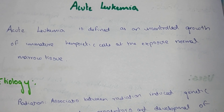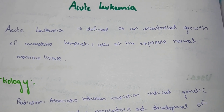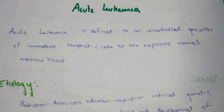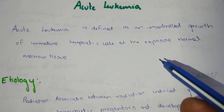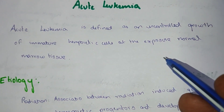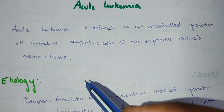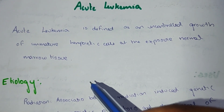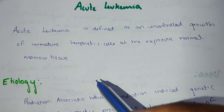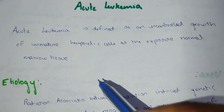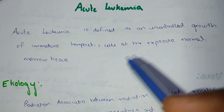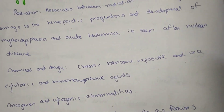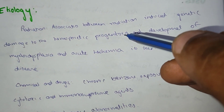Acute leukemia is defined as an uncontrolled growth of immature hematopoietic cells in the bone marrow. Due to exposure, these immature hematopoietic cells have uncontrolled growth — this is acute leukemia. The etiology behind acute leukemia includes radiation.